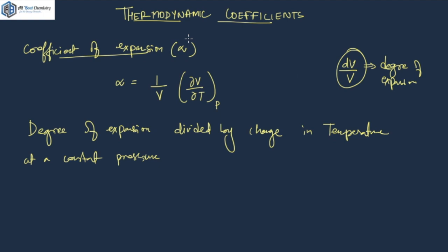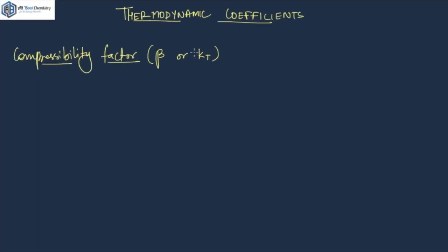Next, let's talk about the compressibility factor. It is denoted by beta, or in some books you will find it as KT. In physics it is denoted by KT; in chemistry we generally express it as beta. The formula is: beta or KT equals minus 1 upon V, and it's del V upon del P at constant temperature. What this is actually doing is it gives the relative volume change in the fluid as it gets compressed.